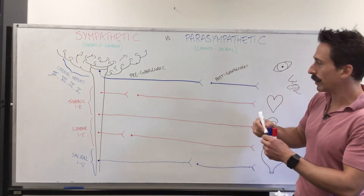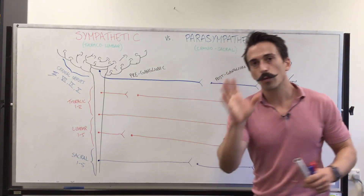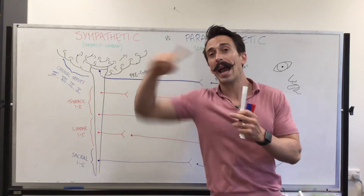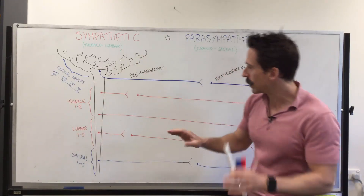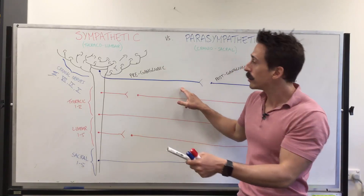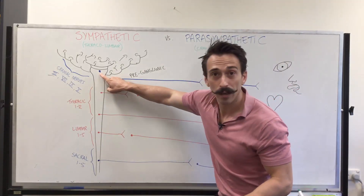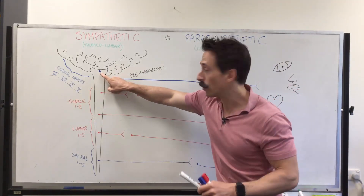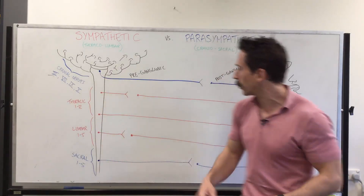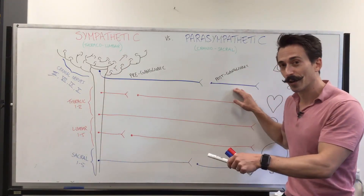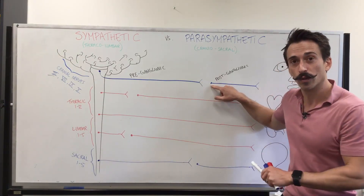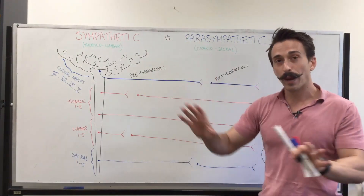Now why is it called this? The term ganglion refers to a nerve cell body that's located outside of the central nervous system. The first neuron is called pre-ganglionic because its cell body is located in the central nervous system. The post-ganglionic neuron has a cell body outside of the central nervous system. That's both sympathetic and parasympathetic.